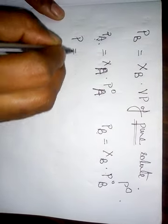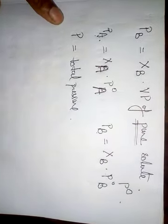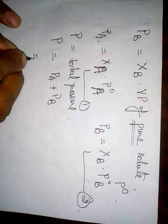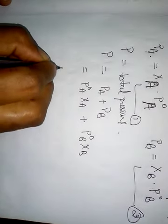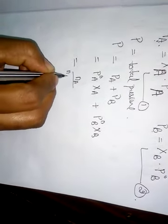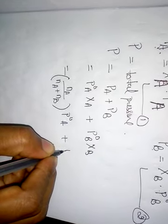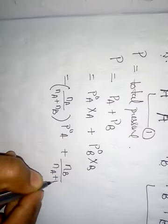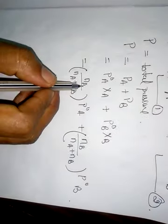According to Dalton's Law of partial pressures, the total pressure P equals Pa + Pb (equation 1). Substituting Raoult's Law expressions: P = P°a·Xa + P°b·Xb (equation 2), where na and nb are the number of moles of solvent and solute respectively.